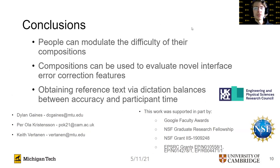To recap, we showed that people can modulate the difficulty of their compositions based on simple instructions, and this can be used to evaluate novel interface error correction features. We also showed the differences and trade-offs between three different methods for obtaining users' intended composition text. Thank you very much for your time, and we would also like to thank Google, the National Science Foundation, and the Engineering and Physical Sciences Research Council for supporting this work.